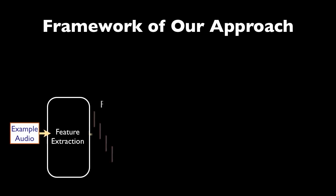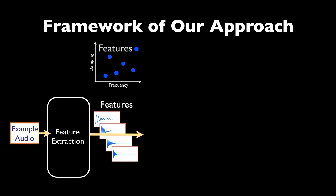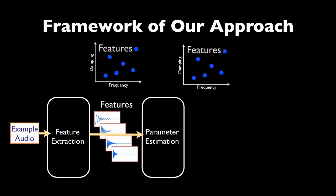The whole pipeline looks like this. An input example audio is analyzed. Its features are extracted and are shown as the blue dots distributed in the frequency damping space. Then, these features guide the parameter estimation process, which finds the best material parameters that preserve the perception of the example material.